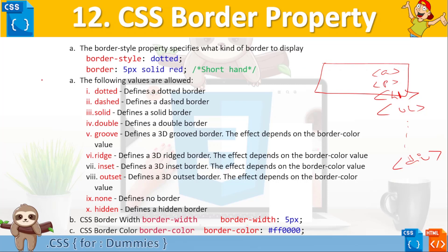There are various different controls we can apply to set that border. The first is border-style, which specifies the style of the border. The basic property used to set a border is simply border — we write border colon and then we specify the width, which defines how big or small, meaning the thickness of the border.